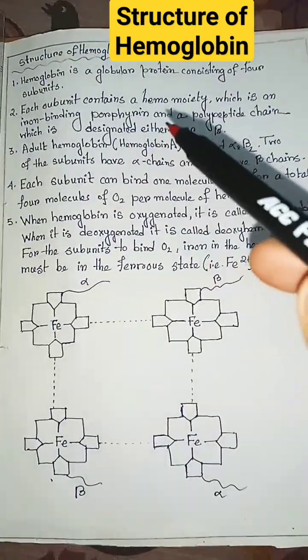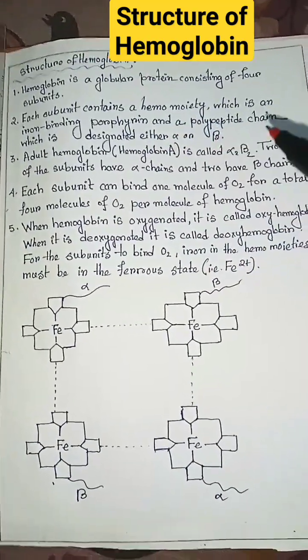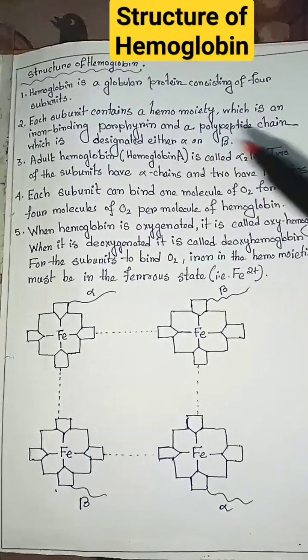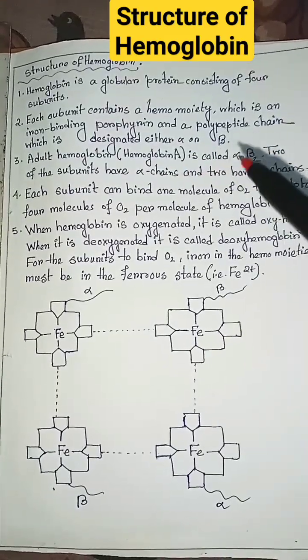Each subunit contains a hemomoiety, which is an iron-binding porphyrin, and a polypeptide chain which is designated either alpha or beta.